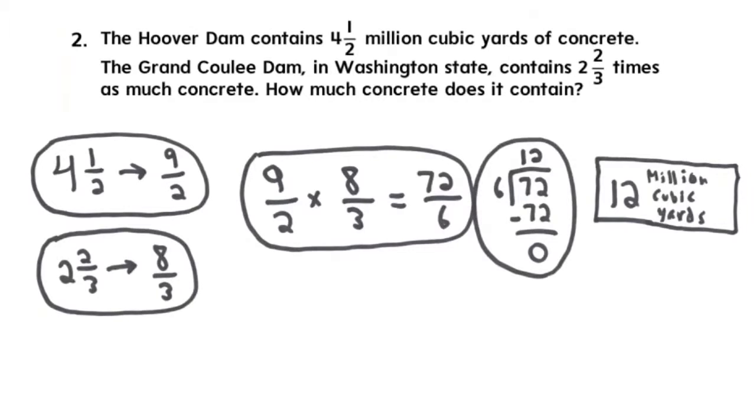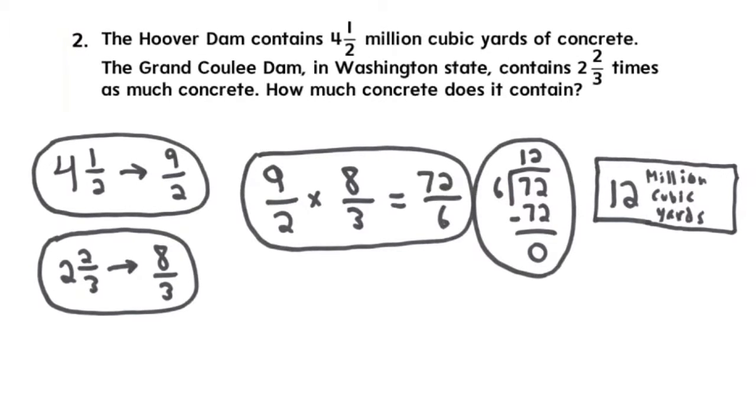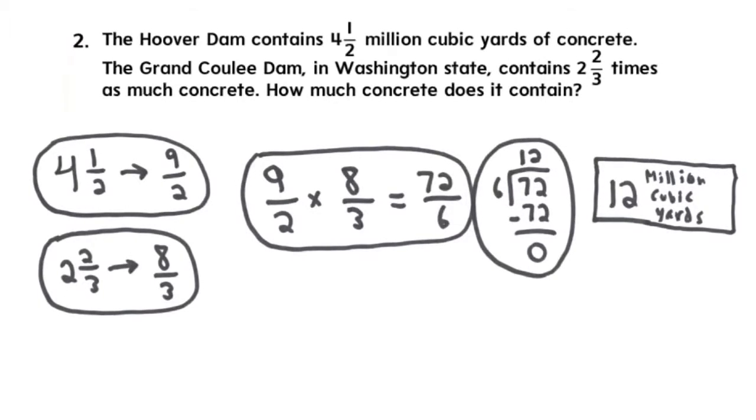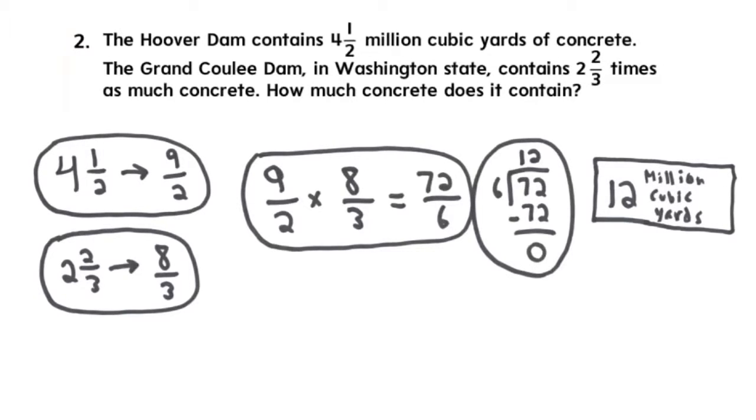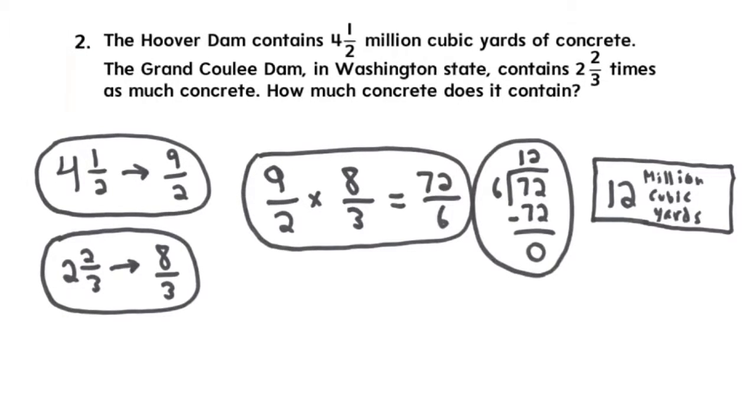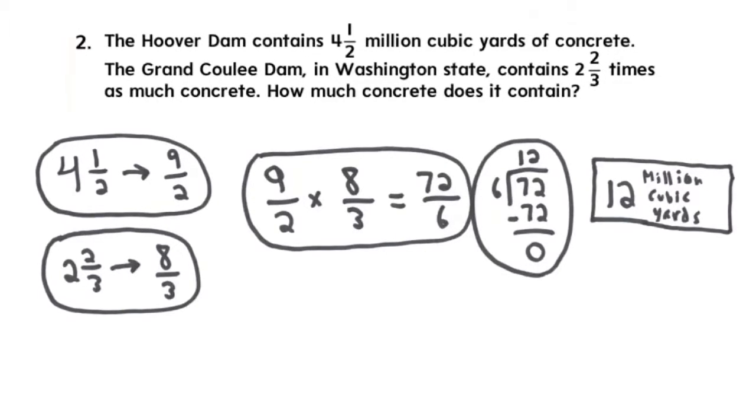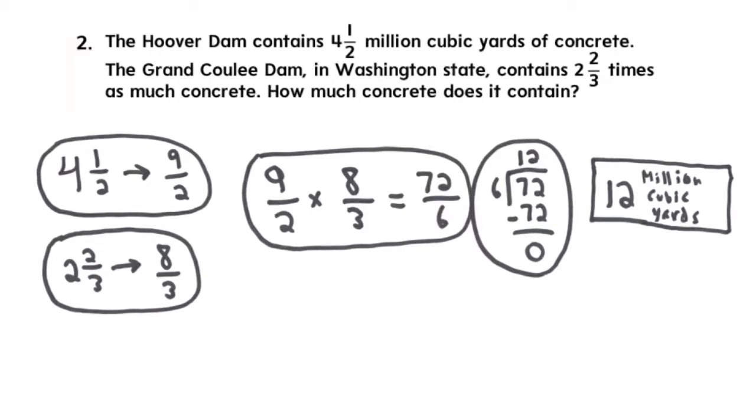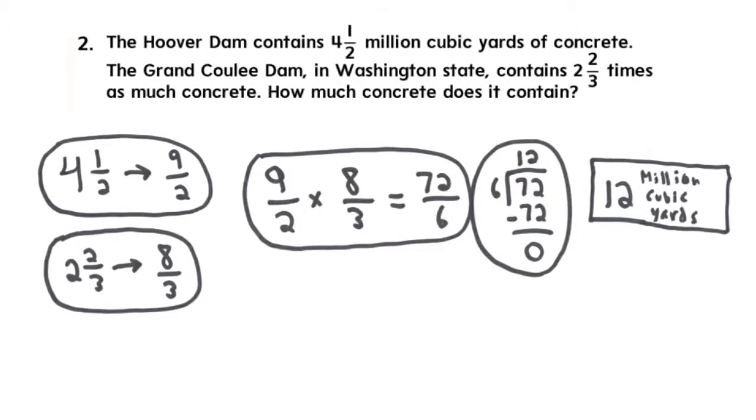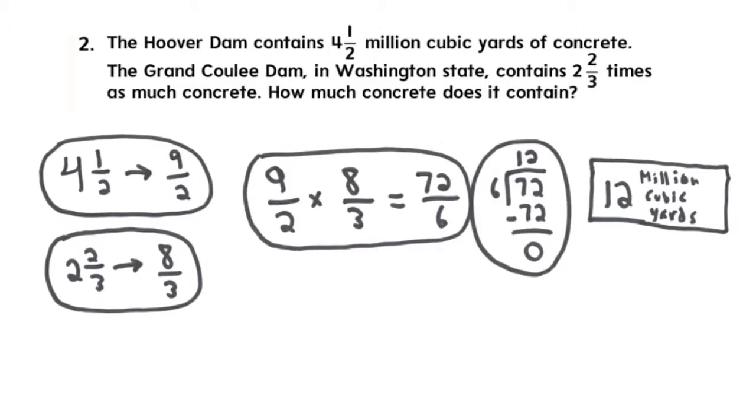In example 2, they want you to multiply those two mixed numbers. Here's the thing: you would need to turn them into improper fractions. If we use MAD on 4 and 1 half, it ends up becoming 9 over 2. If we use MAD on 2 and 2 thirds, it becomes 8 over 3.